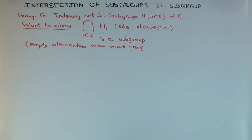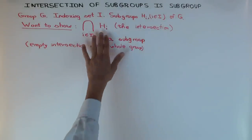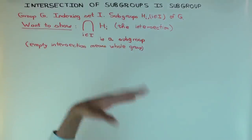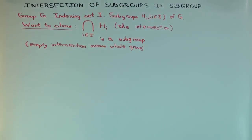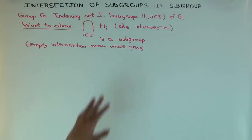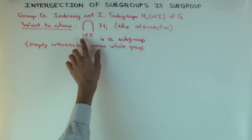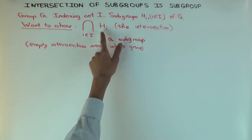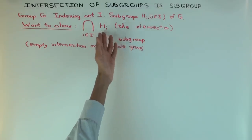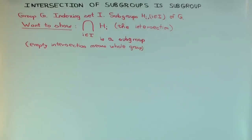There is a little convention you should get used to: if you have an empty intersection, meaning you are intersecting but there is nothing to intersect — you are trying to take an intersection over an empty set — then it is just taken to be the whole set. If the number of things you are trying to intersect is zero, it is the whole group. It's like how an empty product is considered one or an empty sum is considered zero — the same way an empty intersection is considered to be the whole set.